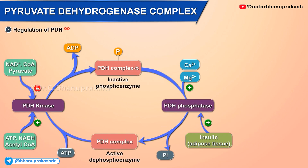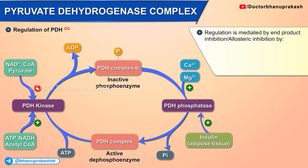Regulation of pyruvate dehydrogenase complex. Regulation is mediated by end product inhibition, or allosteric inhibition, by acetyl coenzyme A, NADH, and ATP.